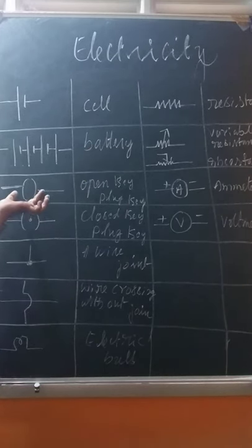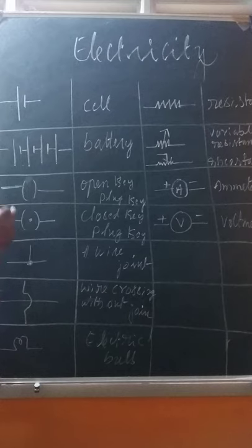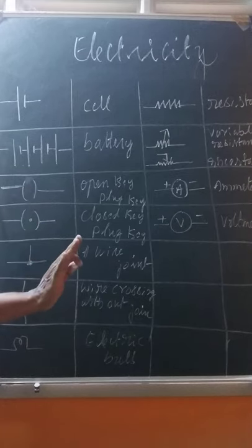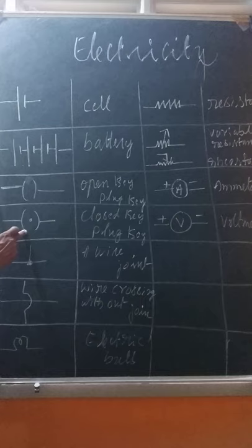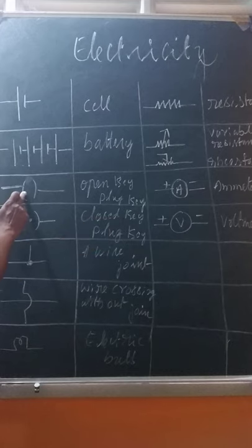These two symbols are plug keys, just like a switch. This one is called the open plug key. If a dot is present, it is a closed plug key — meaning it is switched on. If the dot is not there, it is switched off — that is the open key.